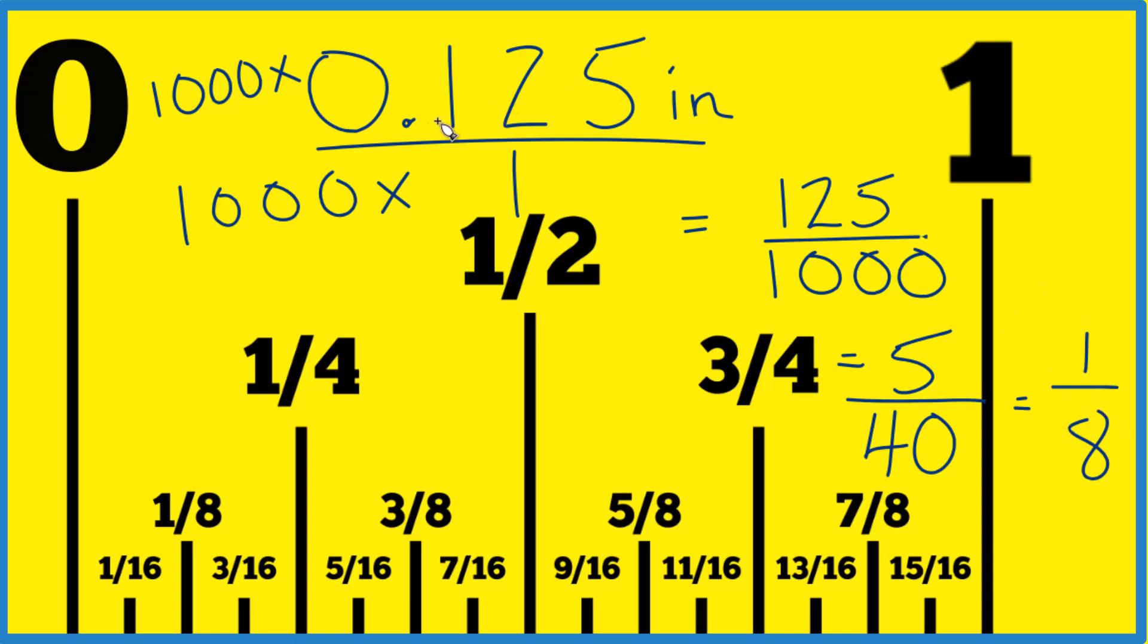So what we end up with, we take this decimal 0.125, try to find it on a ruler. We convert it to a fraction. We get 1/8th and we know that 1/8th, that's right here. It's halfway between the zero mark and the 1/4th mark. That's our 1/8th mark.